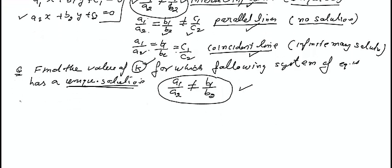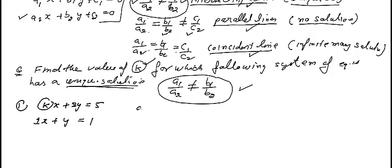Let us take the first question. The first equation is KX plus 2Y equals 5, and the second equation is X plus Y equals 1. A1 upon A2 is equal to K over 1. B1 upon B2: B1 is 2 and B2 is 1, so it is 2 over 1.